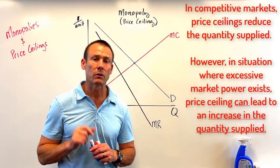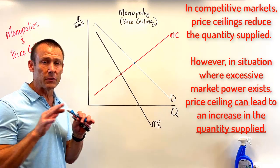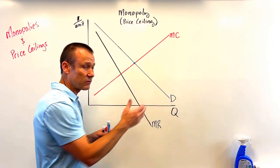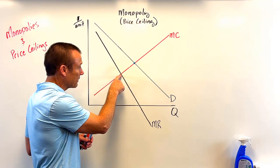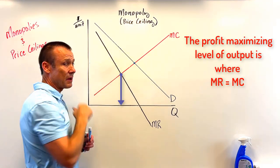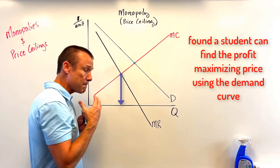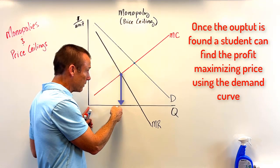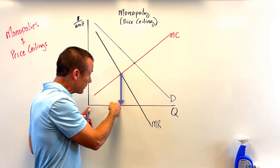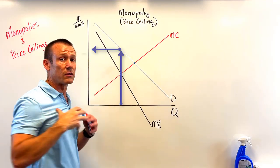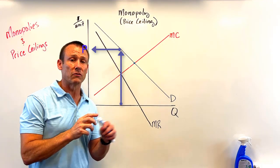A price ceiling can actually increase output — that's what we're going to see in this video. I've got my graph right now showing a monopoly with no regulations and no price discrimination. The MR curve has twice the slope of the demand curve. To find output and price, we go to MR equals MC — that's where they intersect, giving us the output. Then we take the output up to the demand curve to get the price, because the demand curve tells you the maximum price you can charge to sell that level of output.